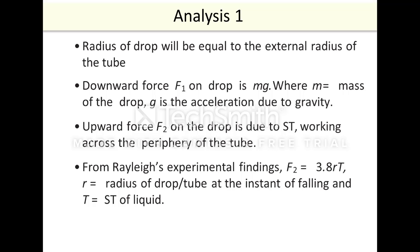Analysis 1: Radius of drop will be equal to the external radius of the tube. Downward force F1 on drop is mg, where m is the mass of the drop and g is the acceleration due to gravity. Upward force F2 on the drop is due to surface tension working across the periphery of the tube.